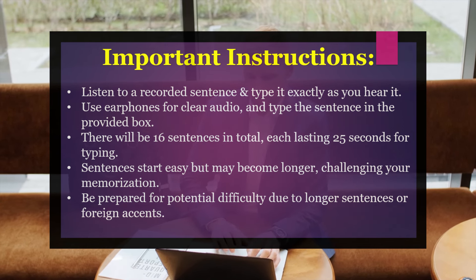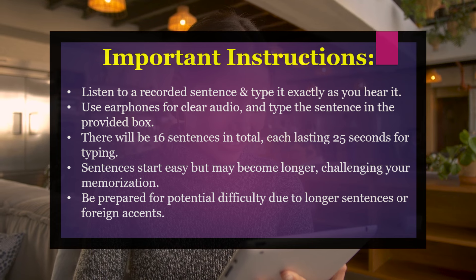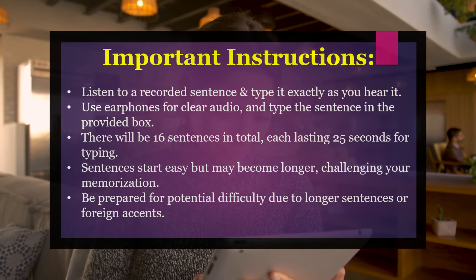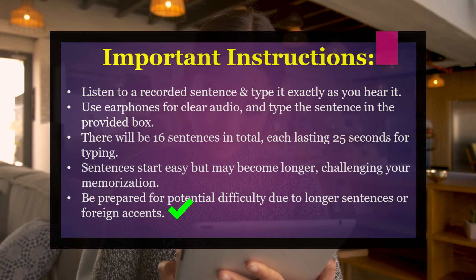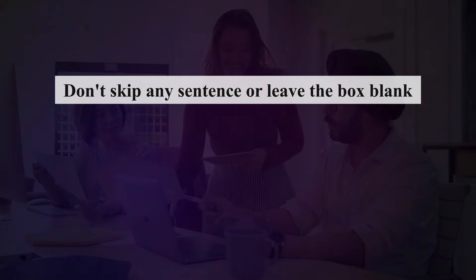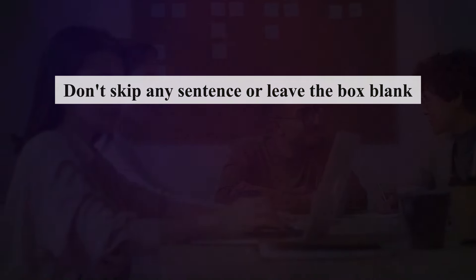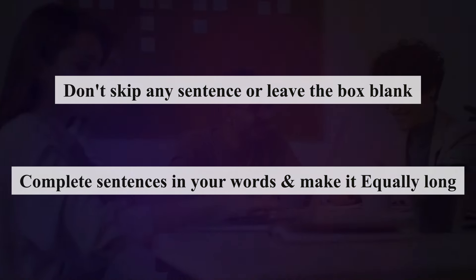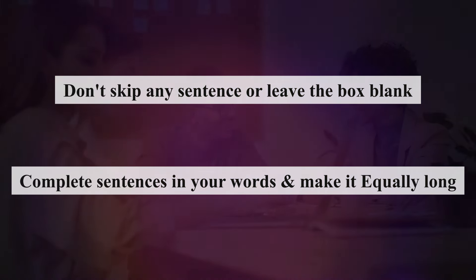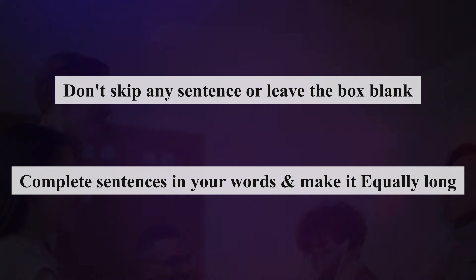The first two or three sentences will be short and easy, but slowly and gradually the sentences will become longer and it may become difficult to memorize the entire sentence. There could also be situations where you might not be able to understand the sentences due to a foreign accent — British or American. You must not skip any sentence or leave the box blank, as leaving a section blank means getting negative marking. We must attempt the sentence and try to complete it in our own words if we could not fully understand the actual sentence.